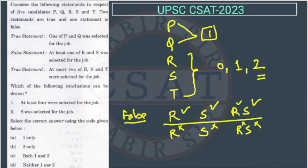So now, which one of the following conclusions can be drawn? At least four were selected for the job. So, how many will get selected for the job? Because out of P and Q, we will select only one. And out of R, S, and T, there can be zero chance also or there can be the possibility of choosing one because R and S are not getting selected.